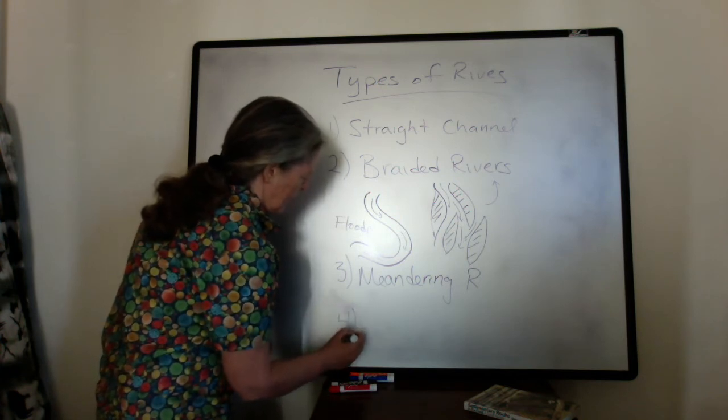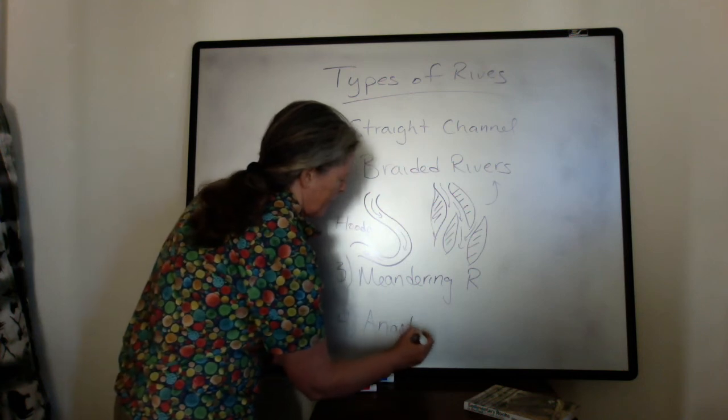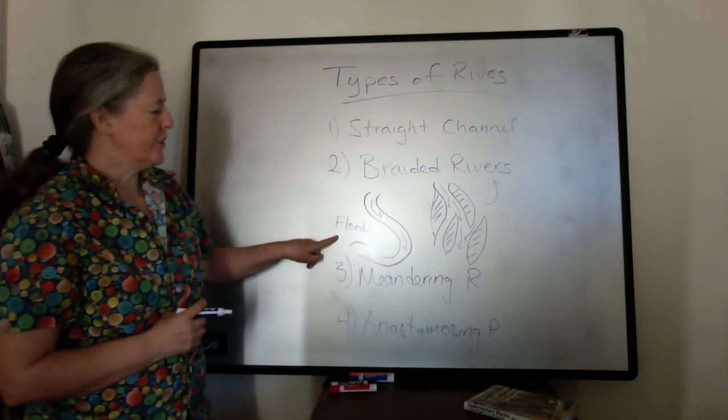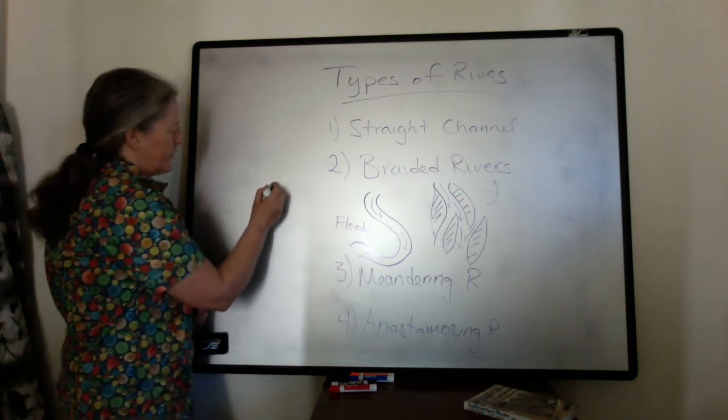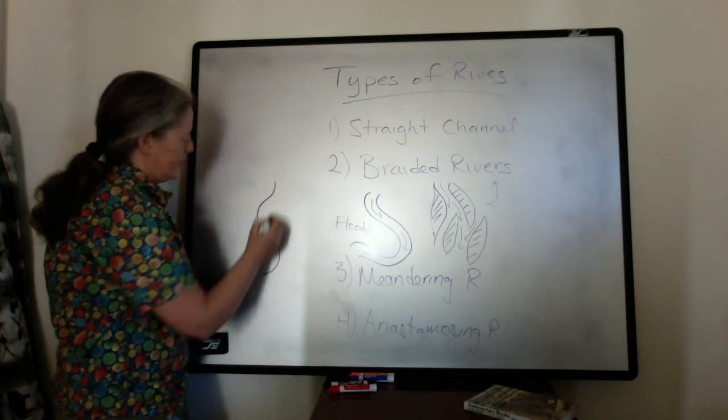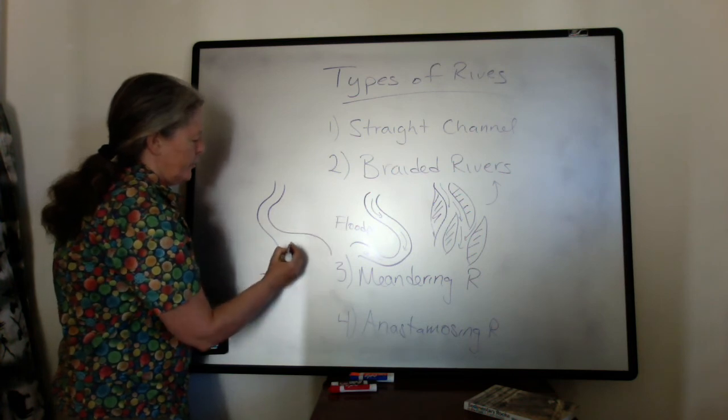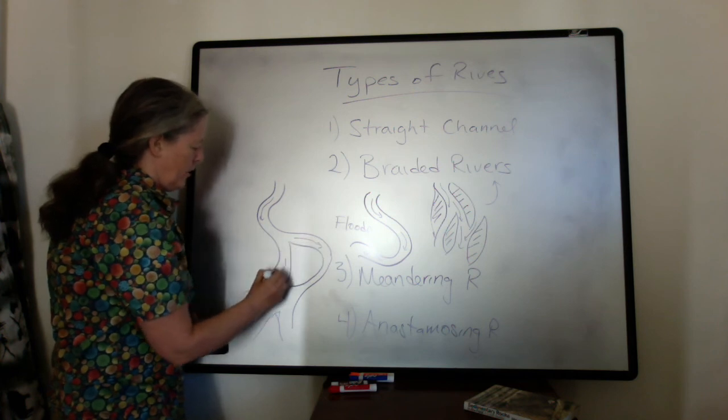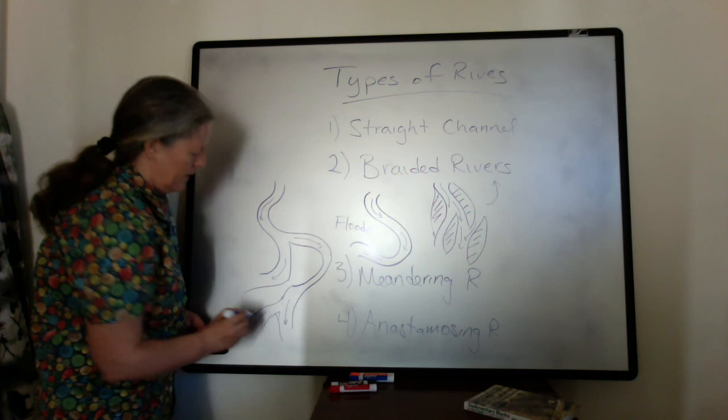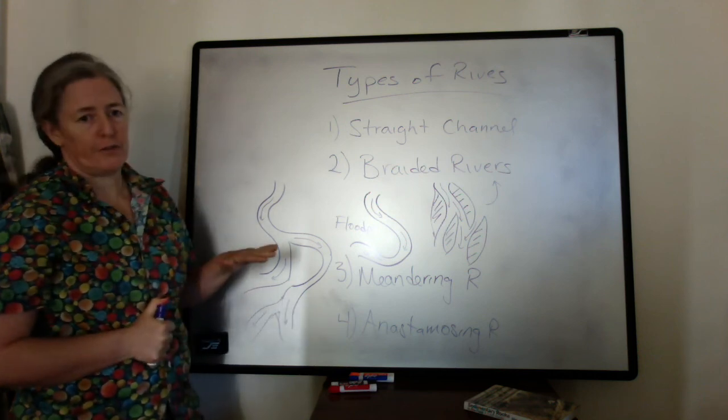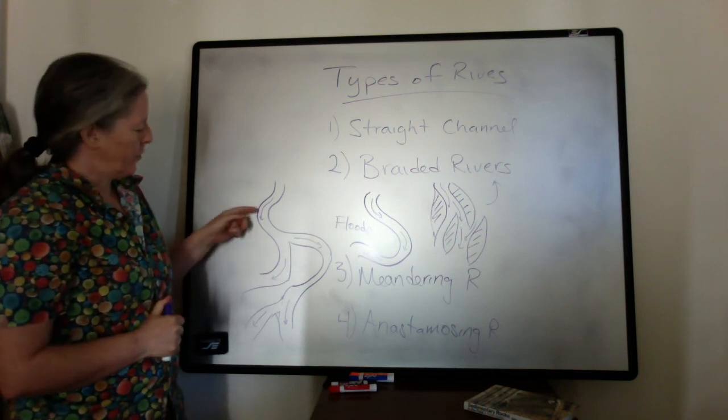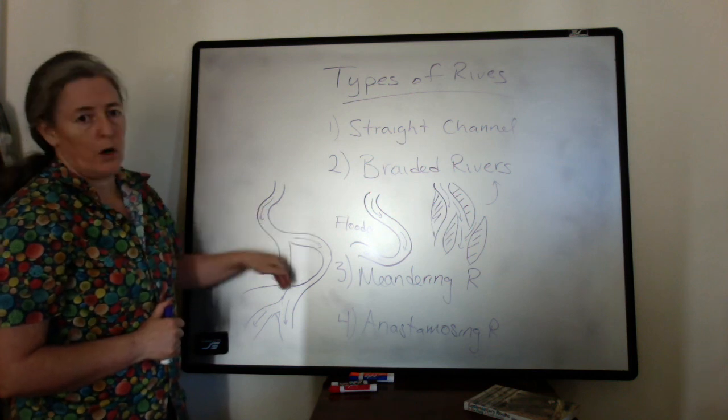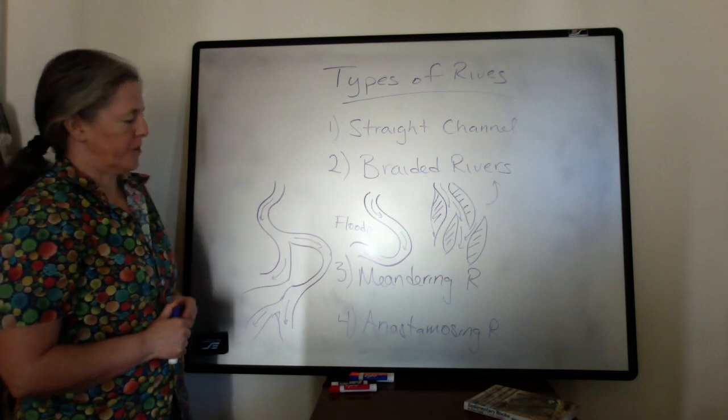There's a fourth type called anastomosing. Anastomosing rivers are very much like meandering rivers except that they have multiple channels. You might have a meandering channel that splits into two, and then sometimes those channels come back together. Anastomosing rivers are really common when the slope is very, very flat, like for example the top of a delta. There's very little slope to drive the flow in a single direction, and it's really just the water pressure itself that's driving the flow from the top to the bottom.